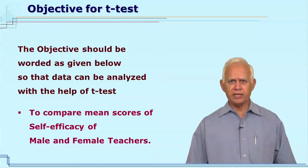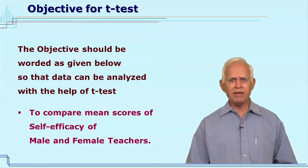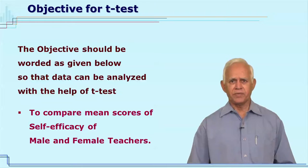Whenever the researcher is interested in analyzing the data with the help of the independent samples t-test, the wording of the objective is very important. As I have already said, the statistical technique will depend upon the wording of the objective. In case of the t-test, the objective should be worded, for example, like this: to compare the mean scores of self-efficacy of male and female teachers.